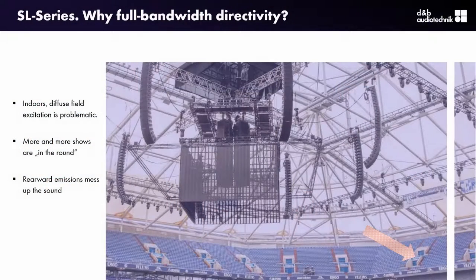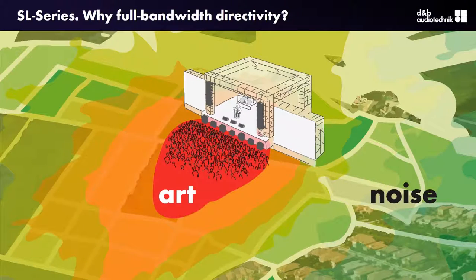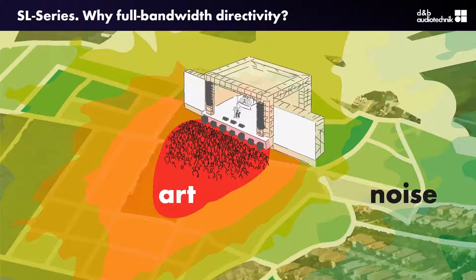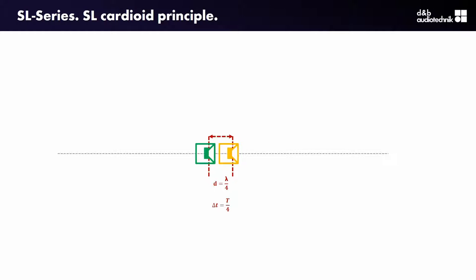What is the motivation for full broadband directivity? First of all, there are large indoor arenas where we have the problem of diffuse field excitation. More and more shows are in the round, especially where rearward emissions mess up with the direct sound intended for a certain seating area. Another point is the outdoor noise emission problem. At an open-air festival, some people pay a lot of money to enjoy the performance, while for people in nearby residential areas it's horrible noise. More art, less noise. So the problem is the low and low mid-frequency range — that's where we lose directivity in conventional systems.